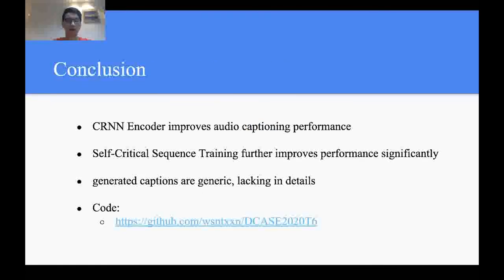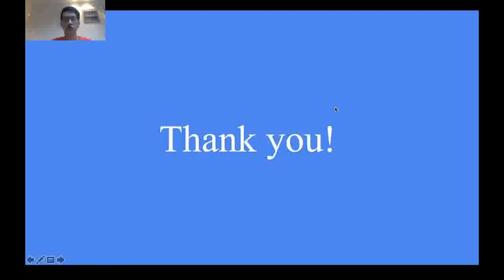In conclusion, in this paper, we propose CRNN for audio encoder and try to address exposure bias and objective mismatch problem in automated audio captioning by SCST. Our proposed CRNN encoder largely improves the audio captioning performance, while SCST further boosts the performance significantly. However, our preliminary analysis reveals that machine-generated sentences are generic and lacking in details compared with human references. Our code is now fully available on GitHub. Thank you for your interest in our work.